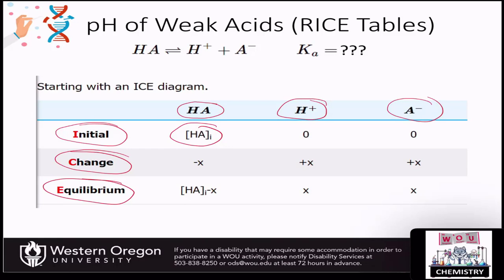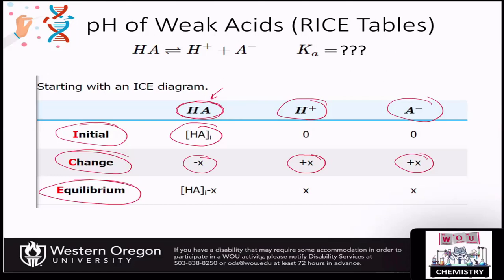When you put this into solution, some of it's going to dissociate — we call that amount x. The H⁺ and conjugate base amounts are the same since they're both dissociating from the starting acid. So if we call the H⁺ concentration x, the conjugate base is also x. Our initial acid concentration changes by minus x, so at equilibrium, the acid concentration is initial minus x, and protons and conjugate base are each x.